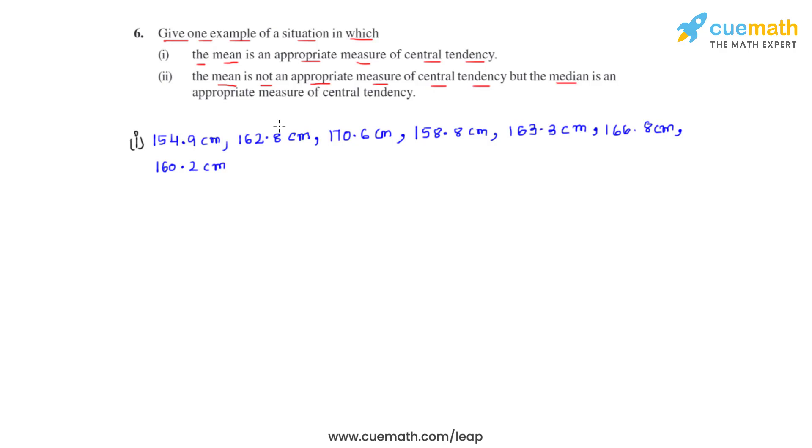So let's take an example. The following data represents the marks obtained by 12 students in a test. In this case it can be observed that there are some observations which are very far from the other observations, as can be seen that 48 is very far from 99 is very far from 97. So median will be calculated as an appropriate measure of central tendency.